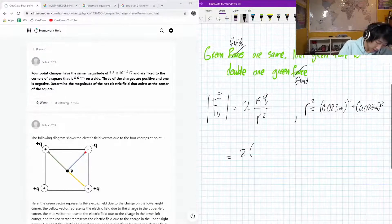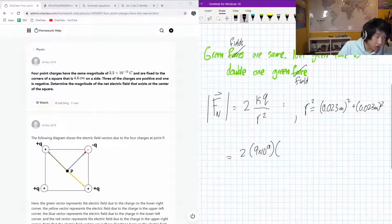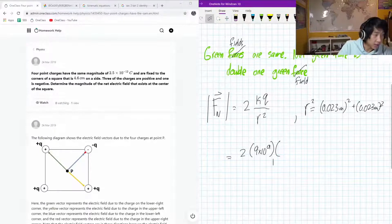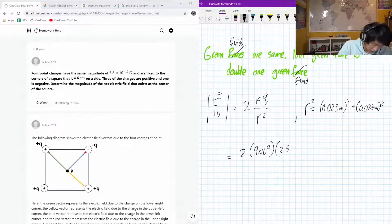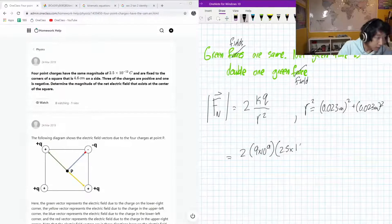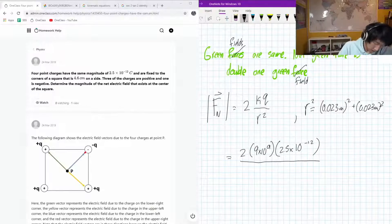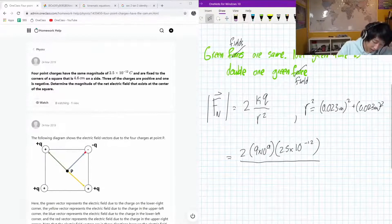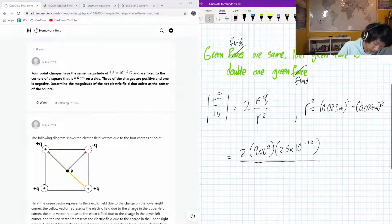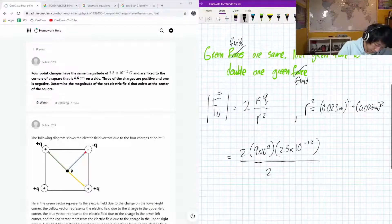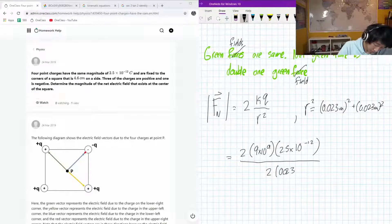So 2, k is Coulomb's constant, 9 times 10 to the 9, our charge is given as 2.5 times 10 to the negative 12, and r squared down here, well, it's just going to be 2 times 0.023 squared.